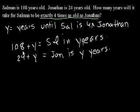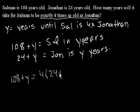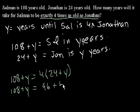In y years, Salman is going to be 108 plus y. And after y years he's going to be exactly four times as old as Jonathan, and Jonathan's going to be 24 plus y years old. So we write: 108 plus y is equal to four times 24 plus y. That gives us 96 plus 4y.